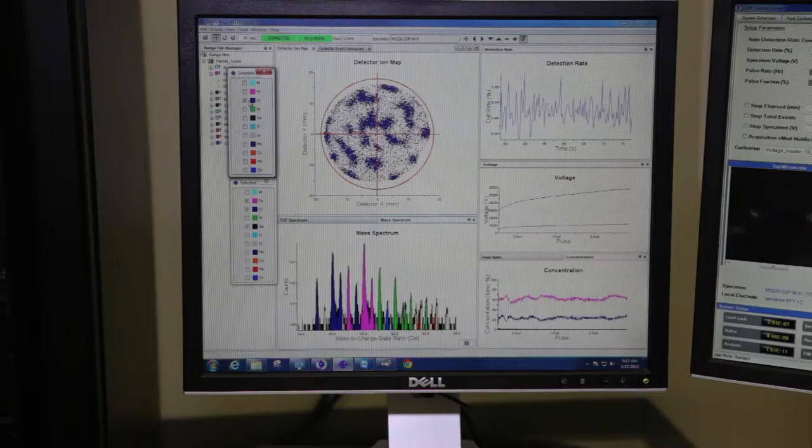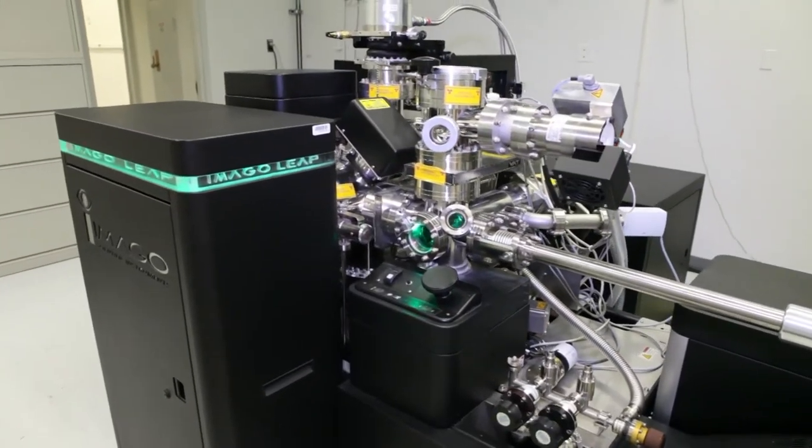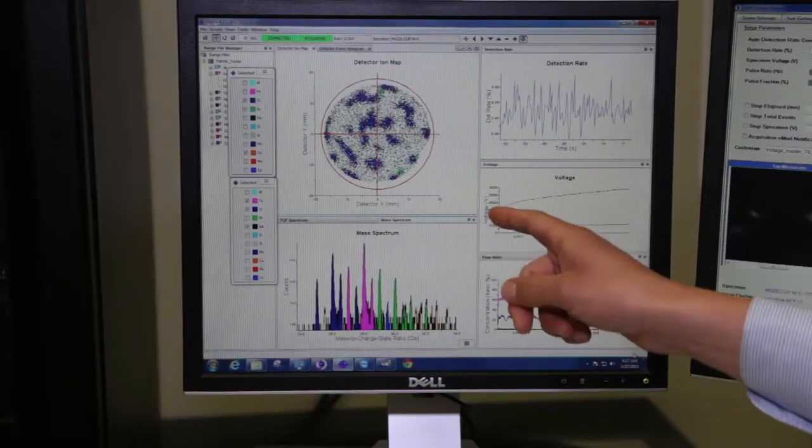I mainly focus on atom probe tomography. The way it works is you take your material and make it into a needle shape. Your needle shaped material is the optic of the microscope. You apply a voltage to the needle shaped material, pulse the voltage, and try to take one atom at a time off. It accelerates onto the detector, and when it hits, you know where it came from and what type of element it is. You can use a computer to reconstruct the material to get a three-dimensional representation of every element with one nanometer resolution.